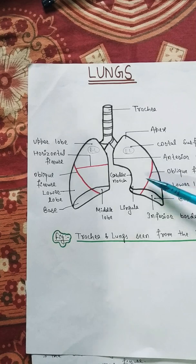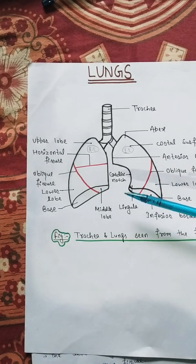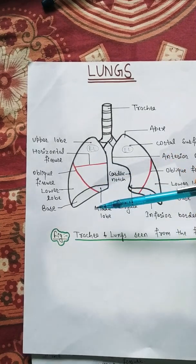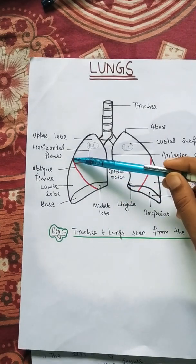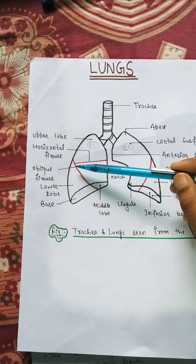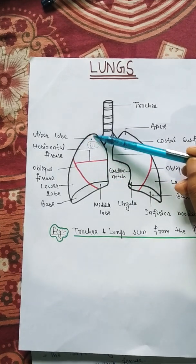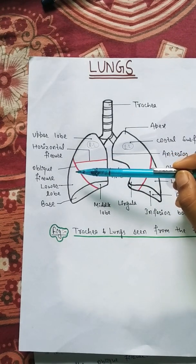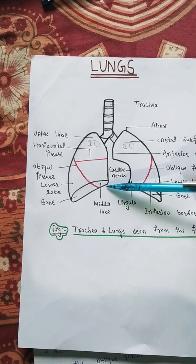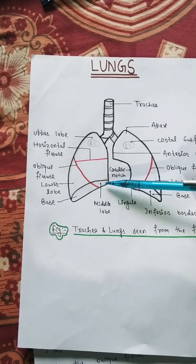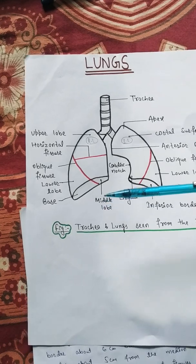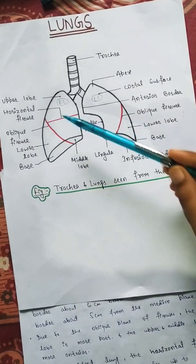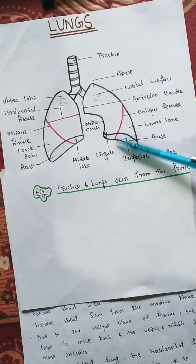Except at the hilum, it passes obliquely downwards and forwards, crossing the posterior border about six centimeters below the apex, and the inferior border about five centimeters from the median plane.